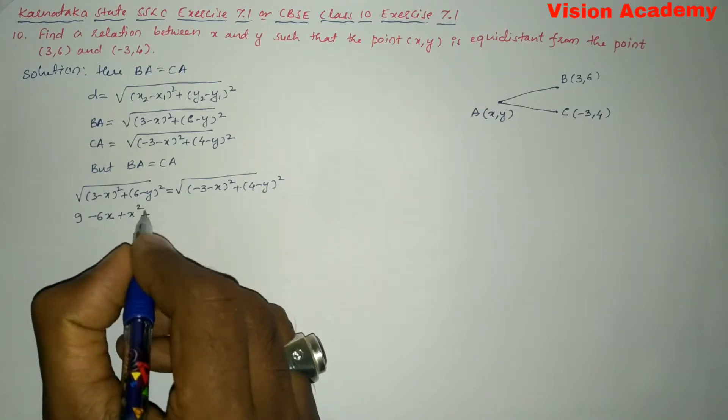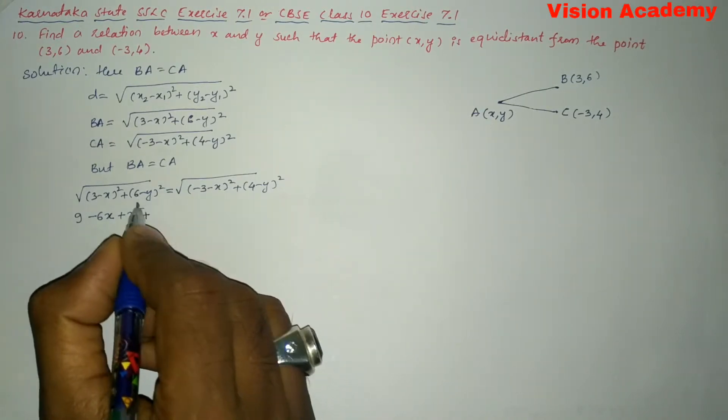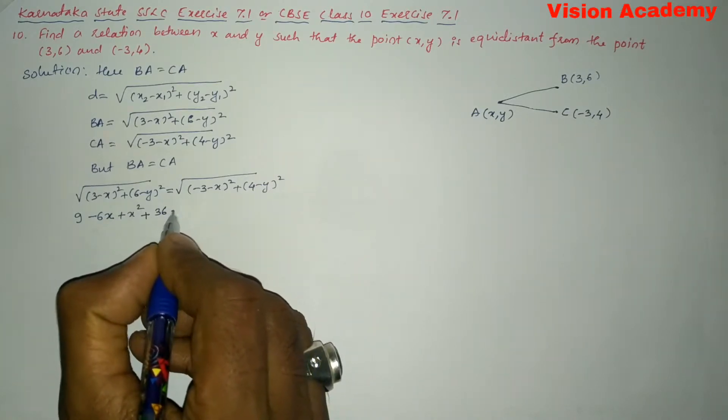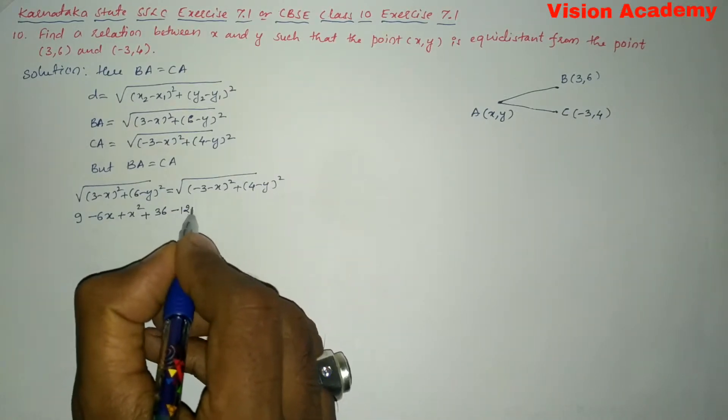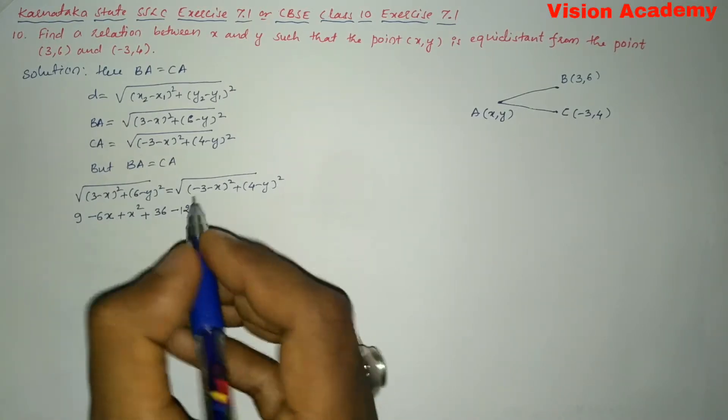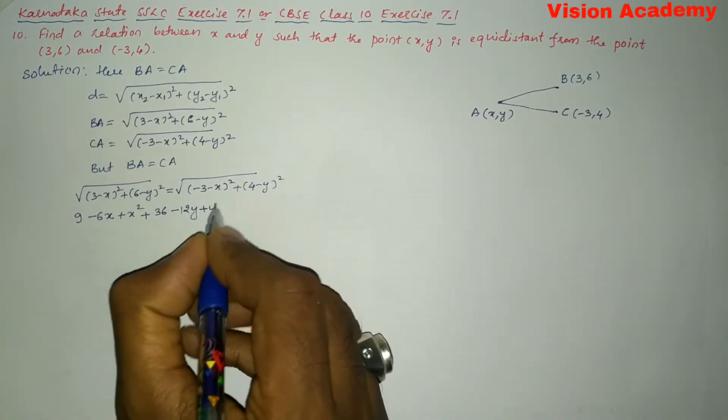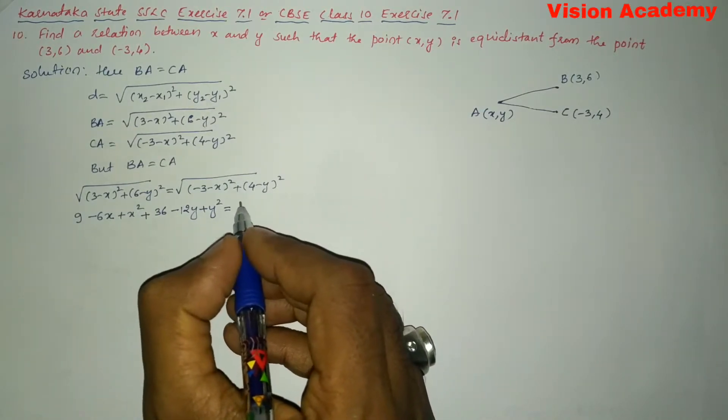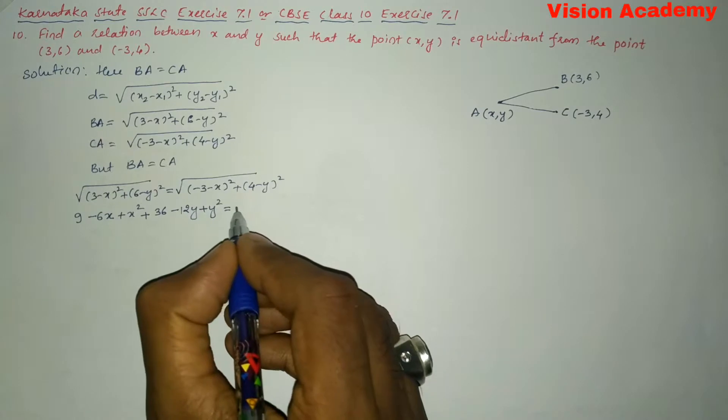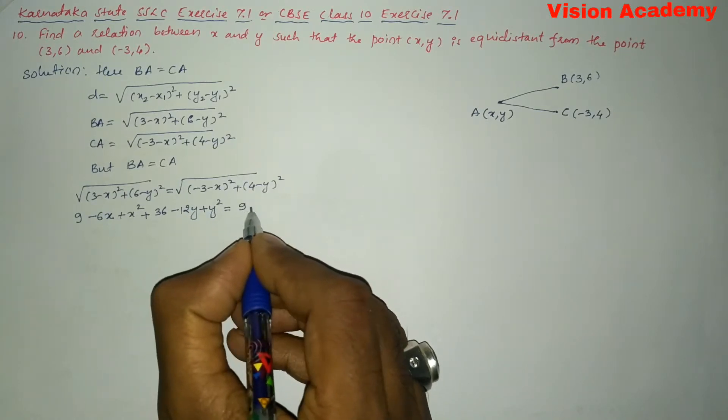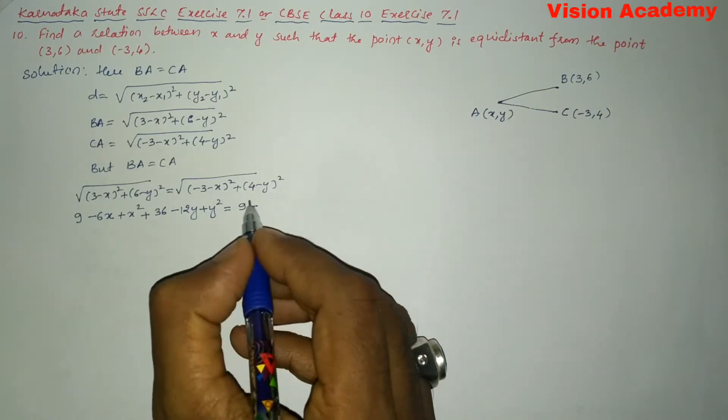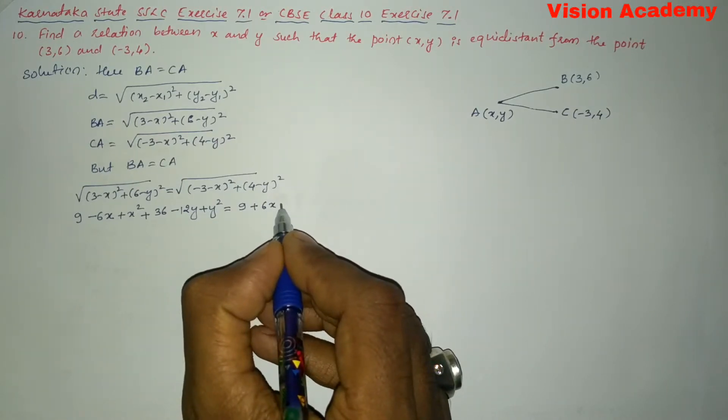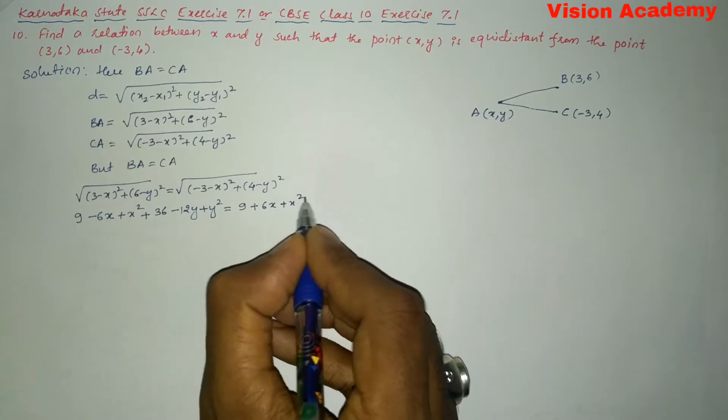Similarly, plus here we can write 6 times 6 is 36, then minus 12Y because 6 times 2 is 12Y, plus Y² is equal to now we will write 3 times 3 is 9, plus it will become 3 times 2 is 6X, and then we will write plus X².